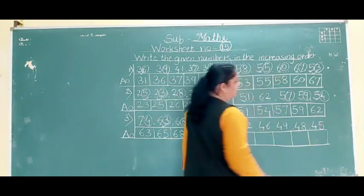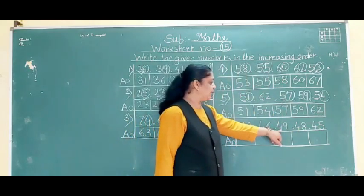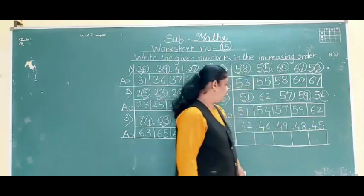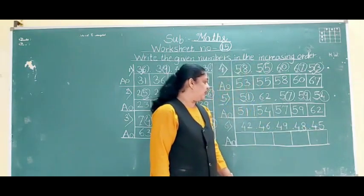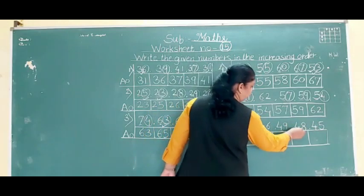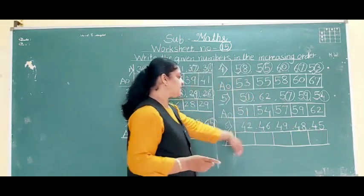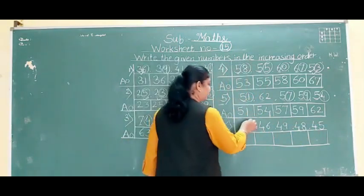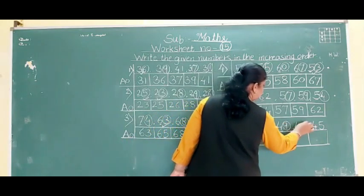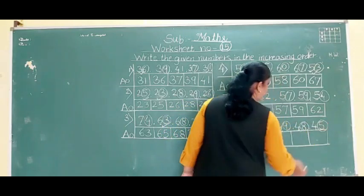Okay? Now the last ascending example: 42, 46, 49, 48 and 45. First digits are all 4. So we look at the second digits: 2, 6, 9, 8 and 5.